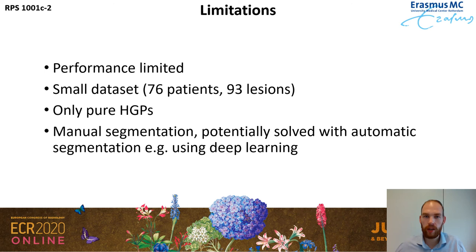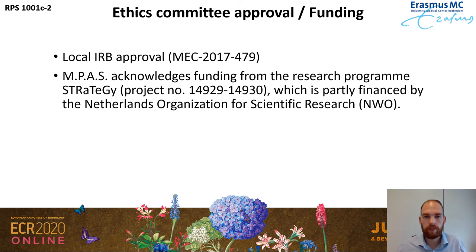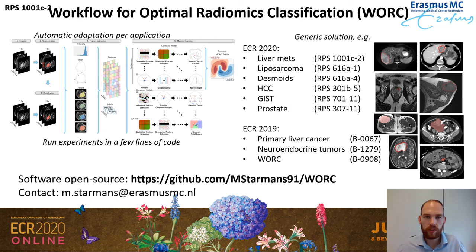Here is the ethics and funding information. The platform we used to automatically determine the best radiomics decision model is open source, so you can use it as well. It's easy to use because it automatically determines the optimal methods. At ECR this year and last year, we showed it's a generic solution that works across a wide variety of applications. If you want to try it, visit the link shown. Feel free to contact me. Thank you for joining this presentation — if you have any questions or would like to collaborate, feel free to send me an email.